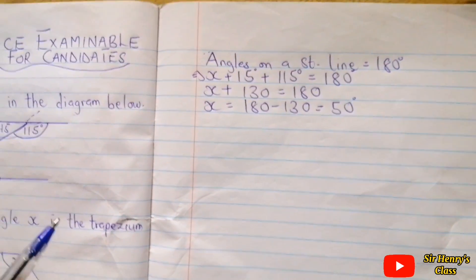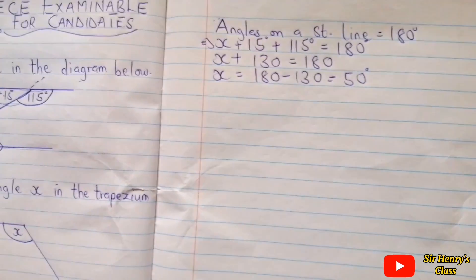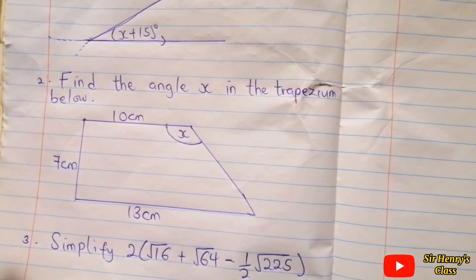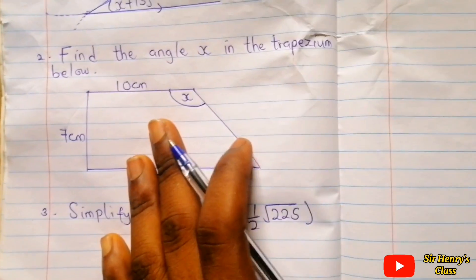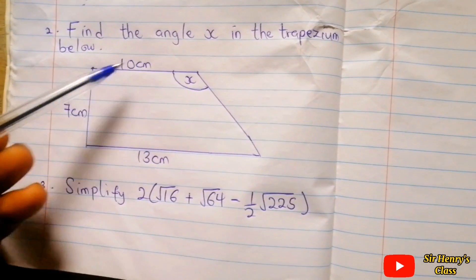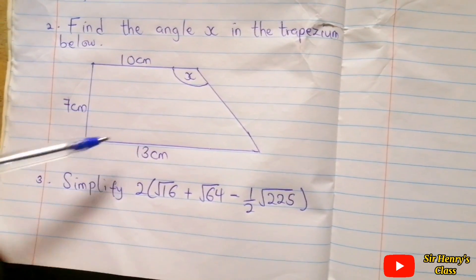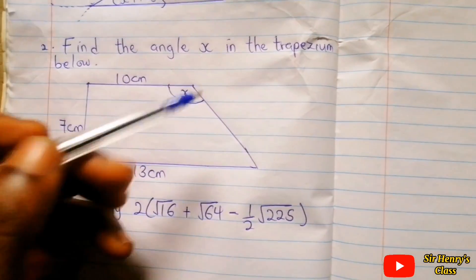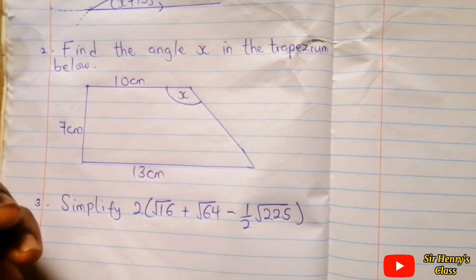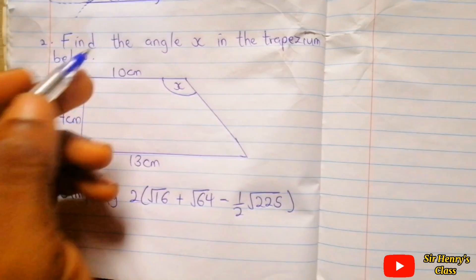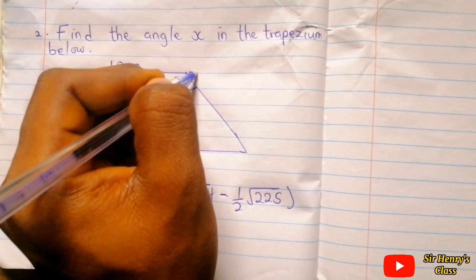Now let's look at B. Find the angle x in the trapezium below. This side to that side is 10 centimeters, 13, 7, and then we have the angle created x. Now what we can do is we can do an extension over here. Now when we introduce a triangle over here, it is going to give this shape to be a rectangle.